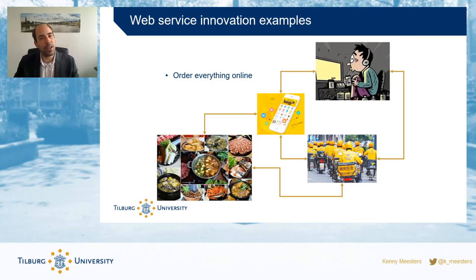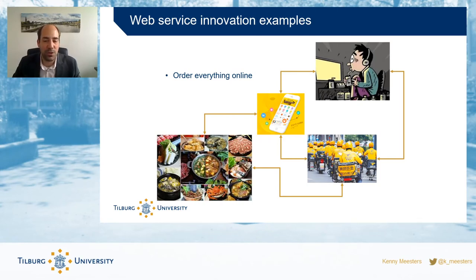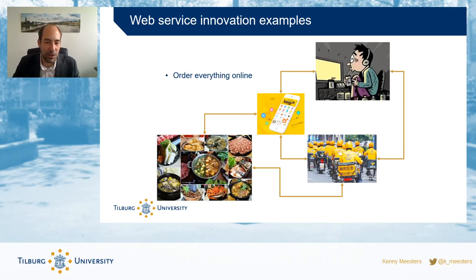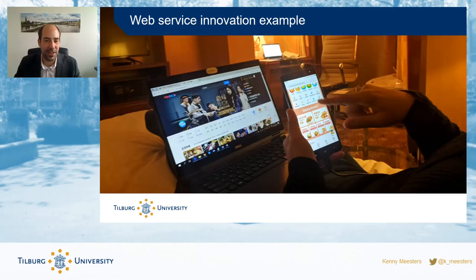An example of how these elements come together is from China, where you can order almost anything online. If you're at home and hungry, you can grab your mobile phone, browse dishes from many restaurants, order, and have food delivered in a very short time frame. You can even track the delivery in real time. China is leading in these kinds of e-commerce experiences.